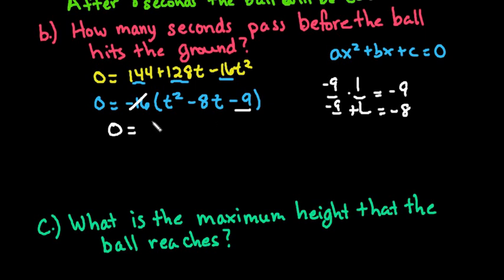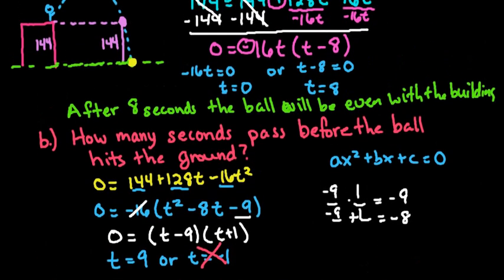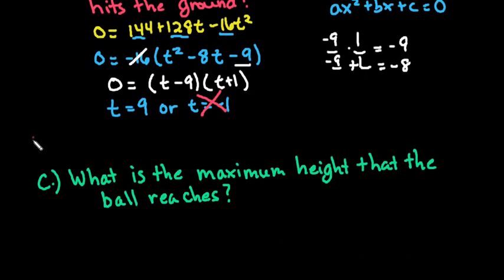So we would have t minus 9 and t plus 1. Solving this gives t equals 9 or t equals negative 1. It doesn't make sense to have a negative time — that would represent if the ball had been thrown from the ground instead of from a height of 144 feet. So we can say after 9 seconds the ball hits the ground.